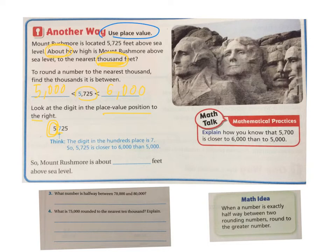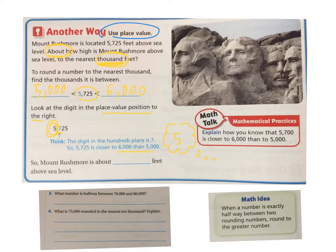We think to ourselves: the digit in the hundreds place is 7. So 7 is more than the midway point, which would be 5. We can always think of 5 as that magic number because 5,500 is exactly halfway between 5,000 and 6,000. Since 7 is more than 5, that means 5,725 is past the midway point, so it is closer to 6,000 than to 5,000. So Mount Rushmore is about 6,000 feet — 6,000 would be the correct estimate to the thousands place.